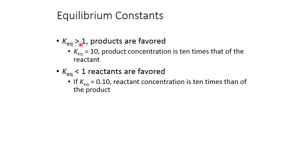When the equilibrium constant is greater than 1, that means the products are the favored reaction. For instance, if the equilibrium constant is 10, that means the concentration of the products is 10 times that of the reactants. If we have an equilibrium constant that's less than 1, then the reactants are favored. So our equilibrium constant gives us a good idea of what position the equilibrium lies.